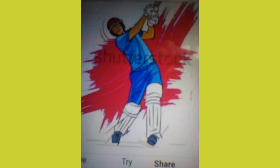2. On side and off side: one side of the ground is called the on side and the other side is called the off side. 3. Run: it is a unit of scoring in cricket. A batsman hits the ball and runs between the stumps along with the non-striker. Usually it is scored in one, two, or three runs.